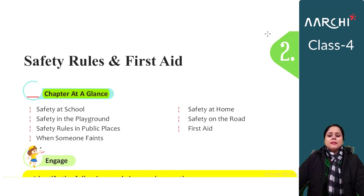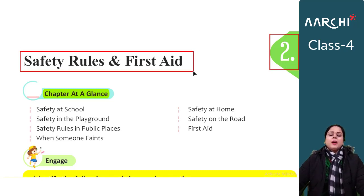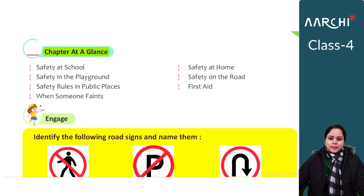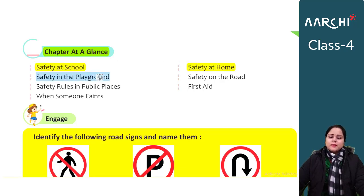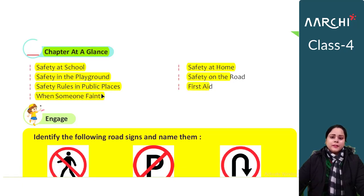Hello students, this is Chapter No. 2 and the name of the chapter is Safety Rules and First Aid. In this chapter, we will read about Safety Rules and First Aid. Before starting the chapter, let's see in the 'Chapter at a Glance' which headings we are going to cover: Safety at School, Safety at Home, Safety in the Playground, Safety on the Road, Safety Rules in Public Places, First Aid, and When Someone Faints. All these topics we will cover in this chapter today.